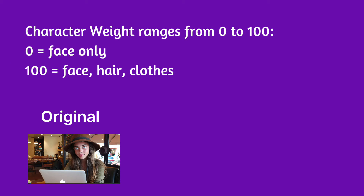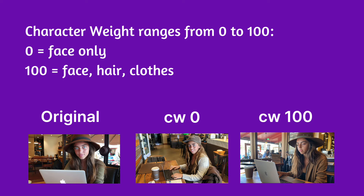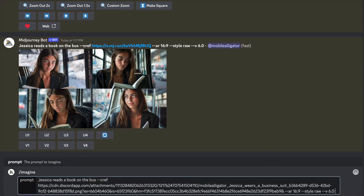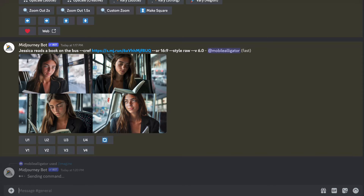The character weight parameter modifies the strength of the consistency. It ranges from 0 to 100. A value of 0 focuses on the face only — this is useful if you want to change to a different outfit, hair, etc., and you can describe the outfit and setting in your prompt. 100 is the default and uses the face, hair, and clothes of the character in your base image. In both Discord and the website, you add --cw to the end of your prompt.